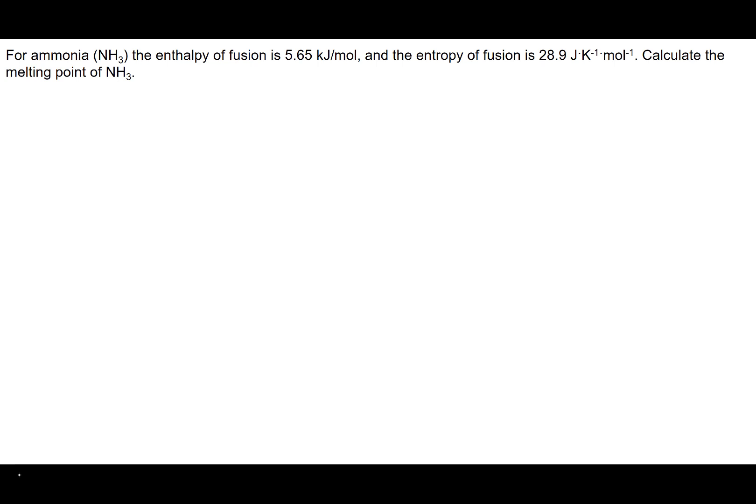What we're given is the enthalpy of fusion of ammonia. So delta H of fusion for ammonia is equal to 5.65 kilojoules per mole.